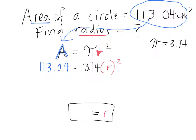We want to undo any operations around our variable. On the right side of the equation, we have 3.14 multiplied by r squared. What's the opposite of multiplication? Division. So what are we going to divide by?